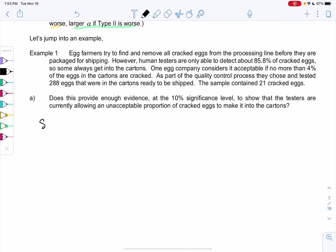Step 1 is the setup, which I'm going to do while we read the question. We're going to find the hypothesis and the alpha level as we read what's going on. Egg farmers try to find and remove all the cracked eggs from processing line before they are packaged and shipped. However, human testers are only able to detect about 85.8% of the cracked eggs.